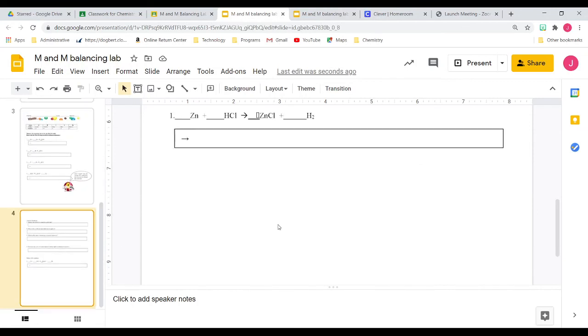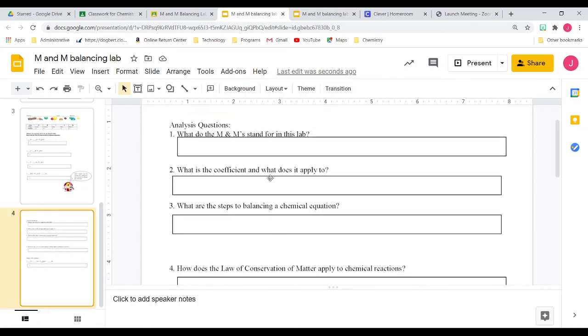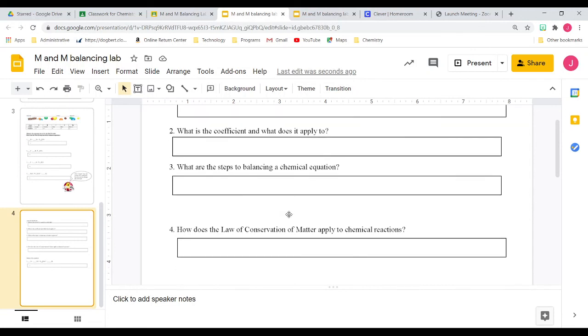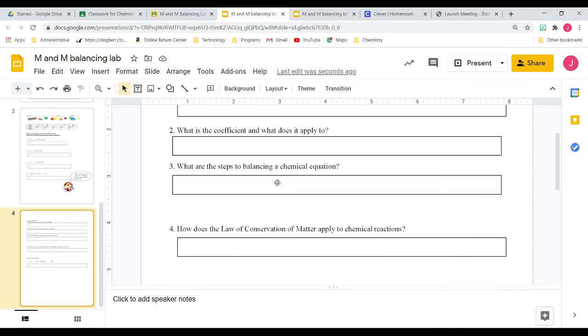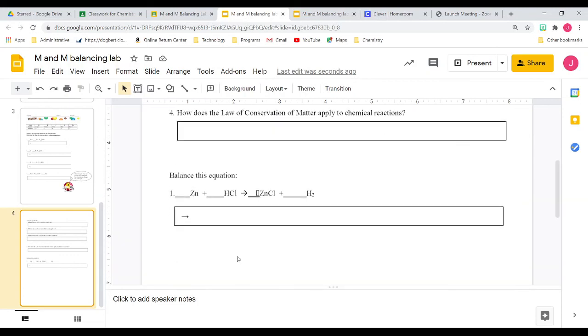And then there's some analysis questions on the last page, like what do the M&Ms stand for? What is the coefficient applied to? What are the steps that you do to balancing chemical equations? And then there's one more there for you. And then you can go ahead and turn this in. If you have any questions, please let me know.